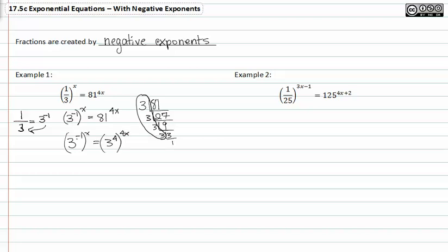From here I'll multiply the powers down. This gives me 3 to the negative x is equal to 3 to the 16x. When I drop out my matching bases, they do match now, I get negative x is equal to 16x.